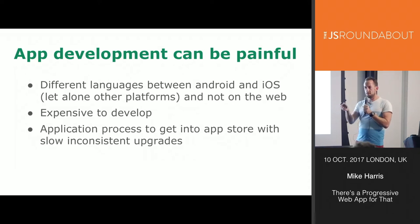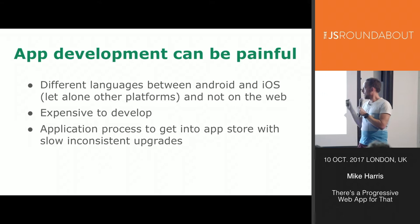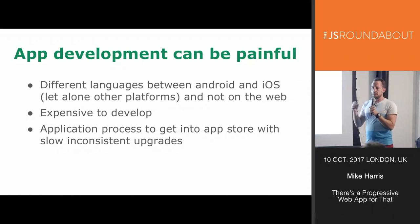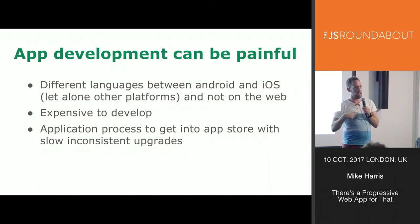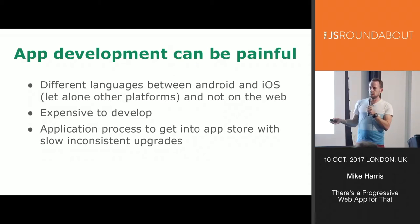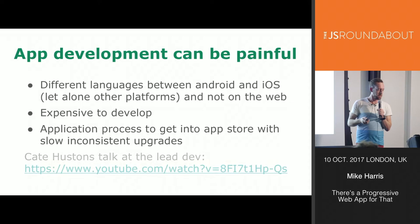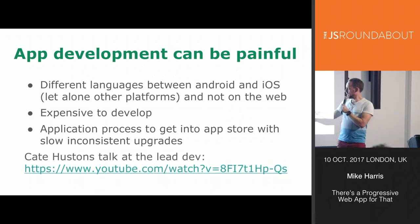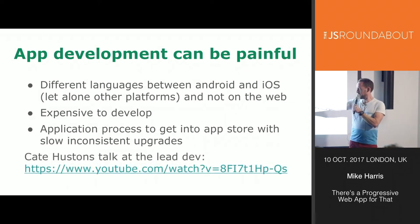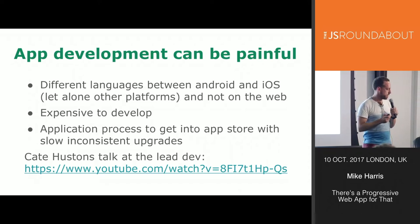There's also the application process. I think it's got a lot better — maybe ten years ago it was painful — but there's still a process to get into the App Store and a different one for Android. And even the release process: if you want to release on the web it goes to your customer straight away. With a native app you have to rely on customers constantly updating their phones. There's a really good video from Kate Hudson at the Lead Dev if you're interested.